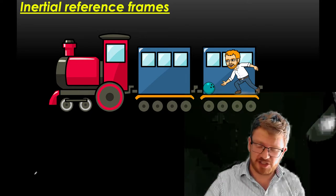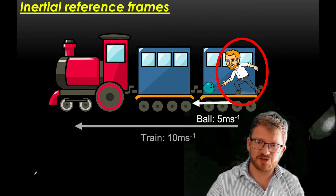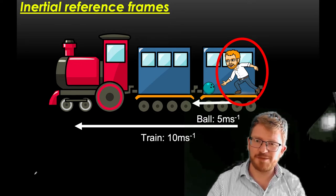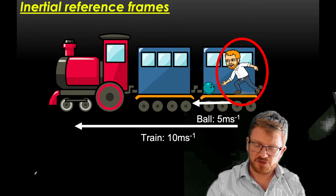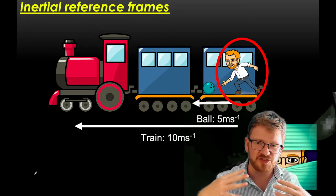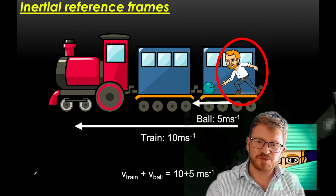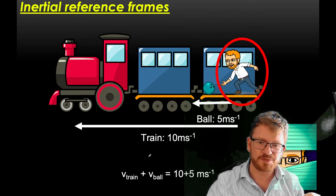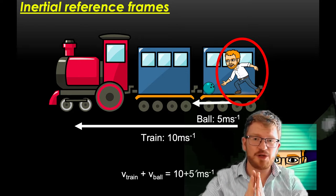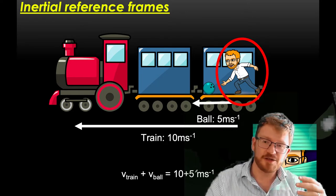Going back to the earlier question: I'm on a train, throwing the ball away from me at 5 metres per second, but my train is travelling at 10 metres per second. We need to introduce the concept of inertial reference frames. If I'm standing on the side of the tracks looking at what's happening, then in my inertial reference frame I will see the train and the ball together — the train at 10 metres per second and the ball at 15 metres per second.